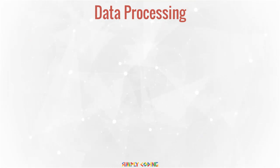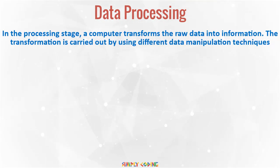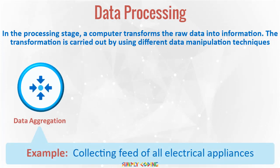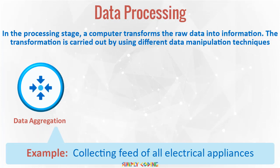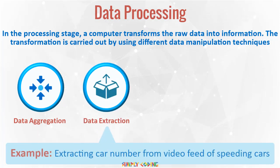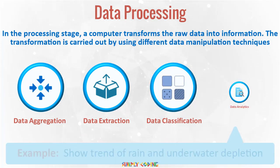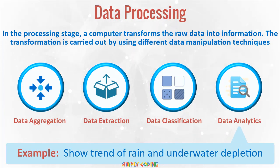Next is data processing. In the processing stage, a computer transforms the raw data into information. The transformation is carried out by using different data manipulation techniques. The process can be just aggregating from multiple devices, like AC or light, or it can be complex, like extracting number plates from a video feed of speeding cars. It could be classifying the data, or doing some real-time analytics and identifying patterns for human analysis.